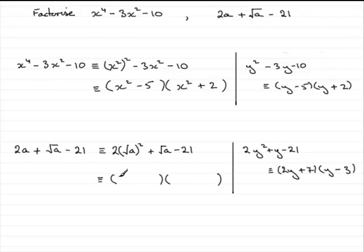We've got 2y squared plus the 7. And then y minus 3. So that becomes y. Y was root a minus 3.